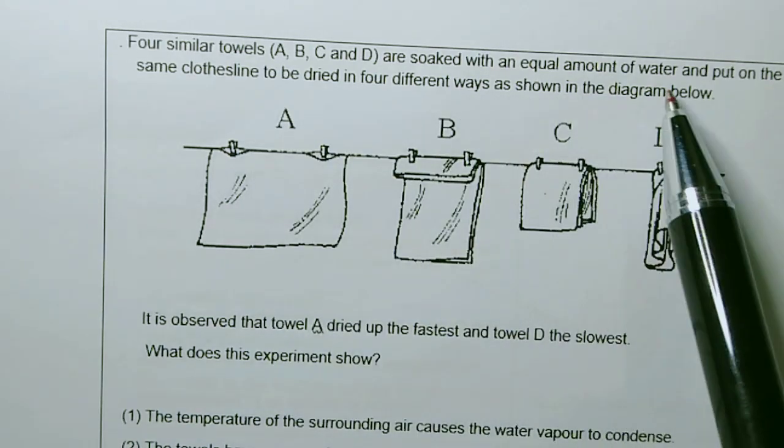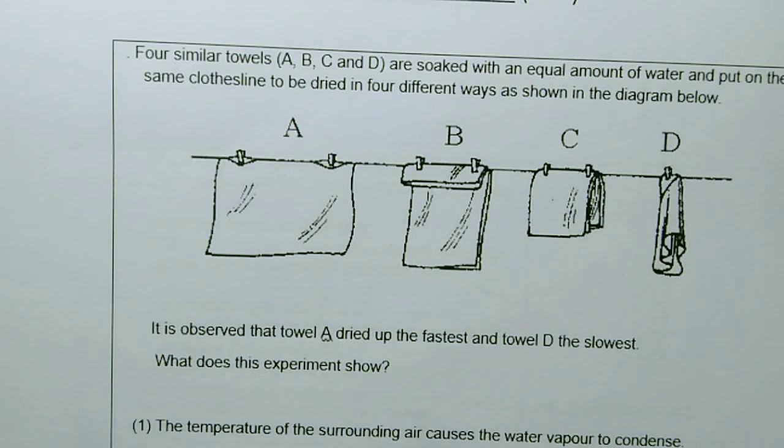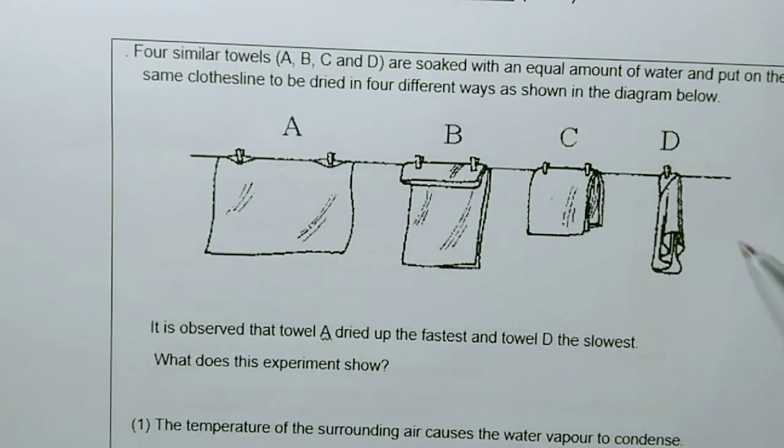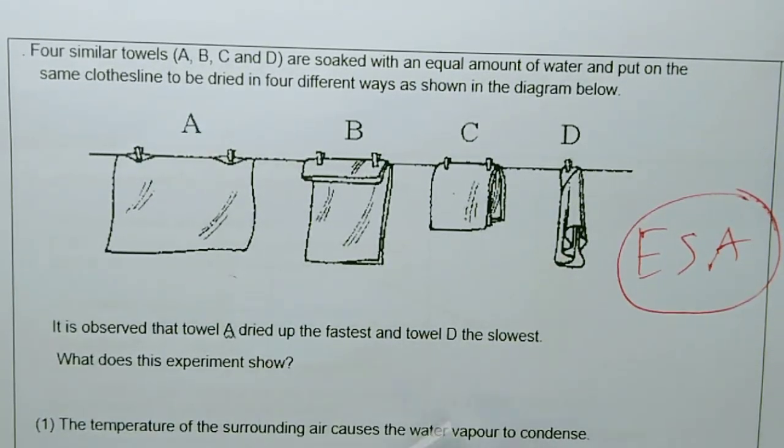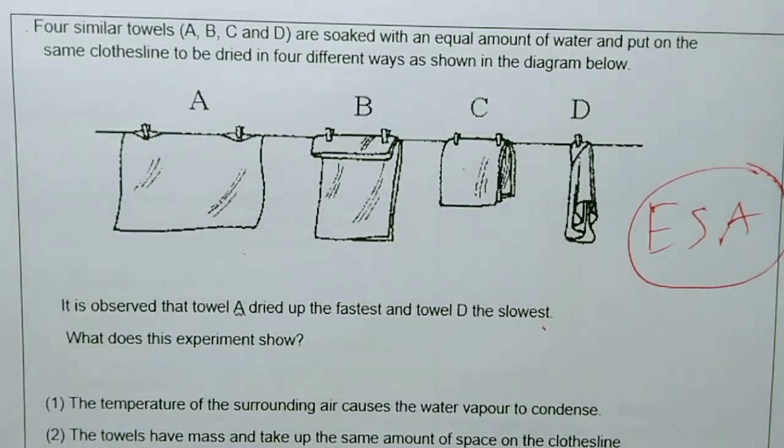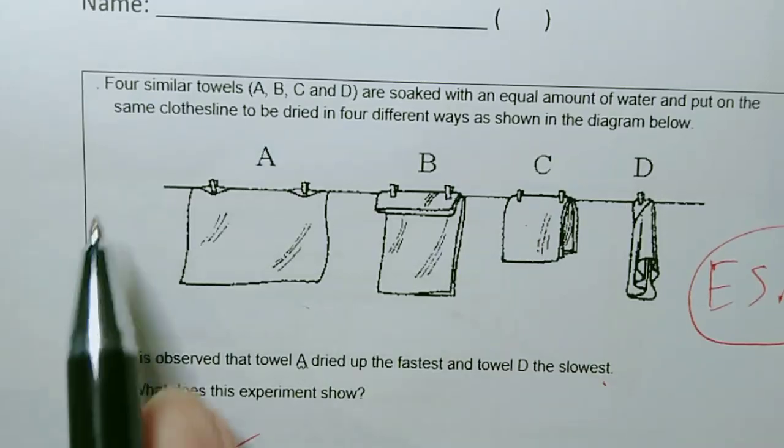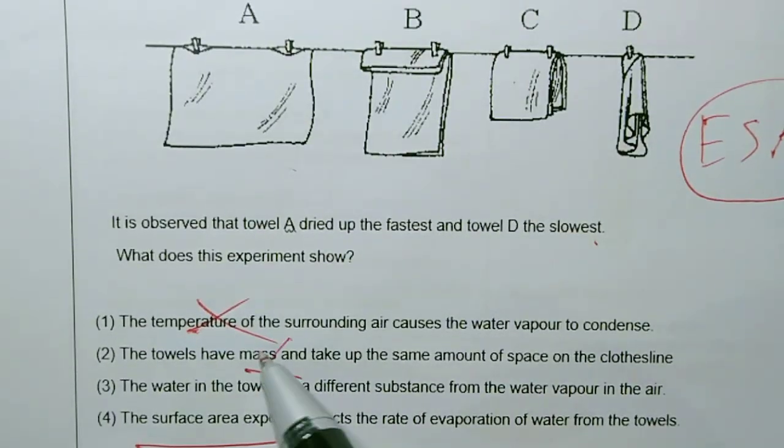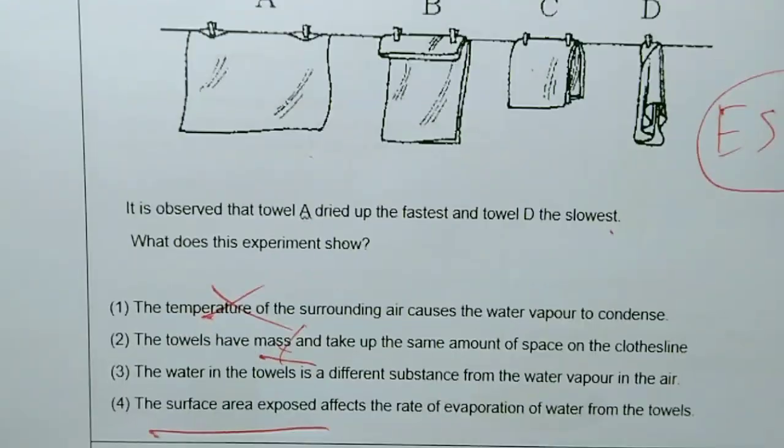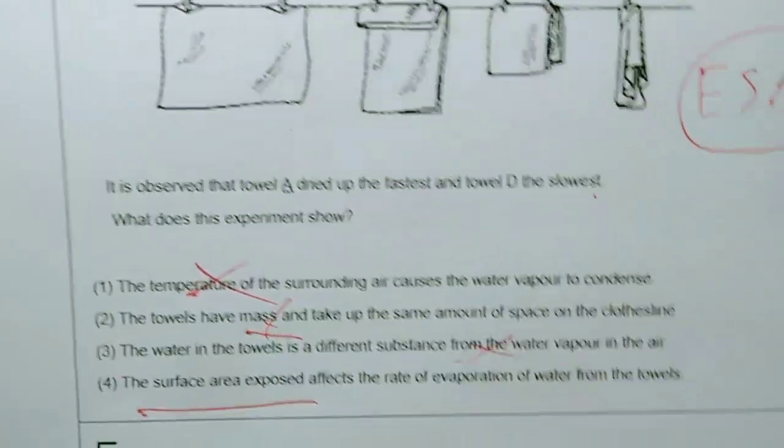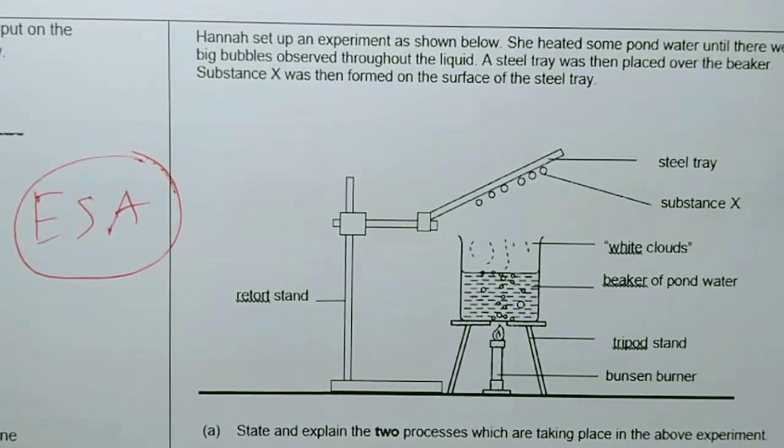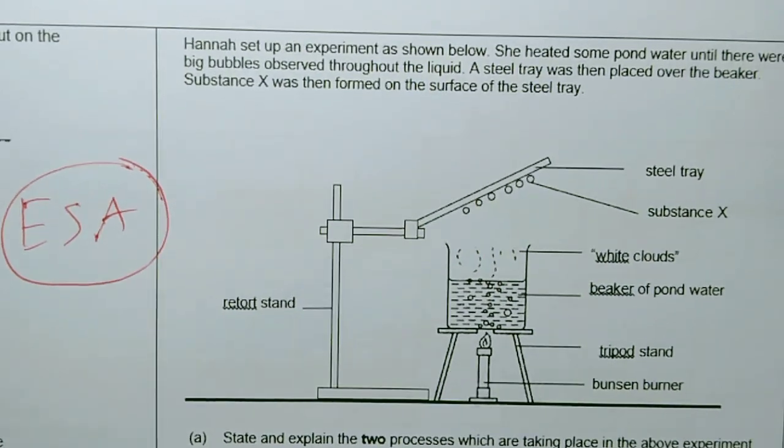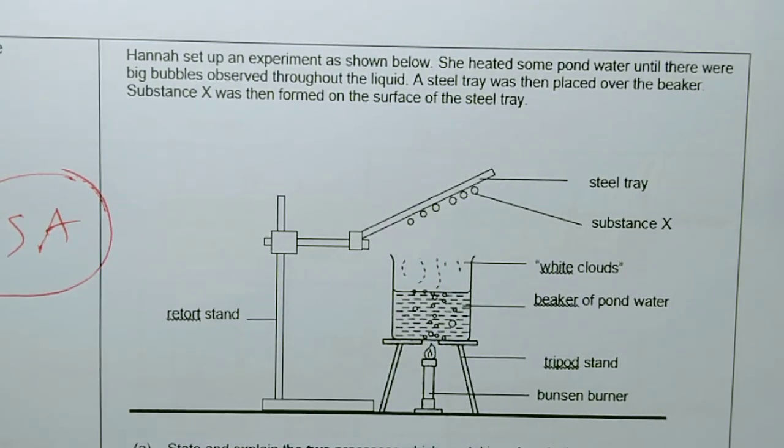Let's go to something on evaporation. Four similar towels are soaked with equal amount of water and put on the same clothesline, dry in 4 different ways. By looking at this you know this is a factor called exposed surface area. Please don't write the short form inside your answer. Towel A dried out the fastest, D is the slowest one. It shows about exposed surface area. I will ignore the power of temperature because they are all at the same place. I will ignore the mass because the mass here, there are similar towels, the mass didn't change. The water is a different substance, that is nonsense. The exposed surface area affects the rate of evaporation. Very simple, straightforward answer.